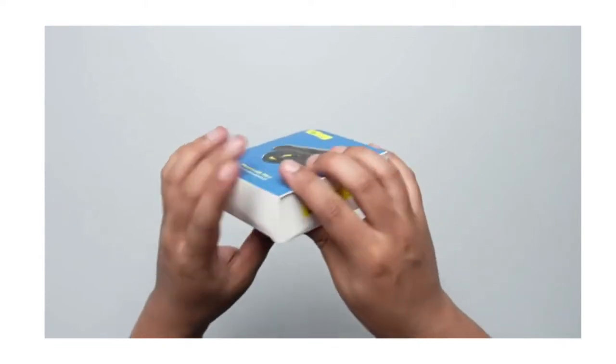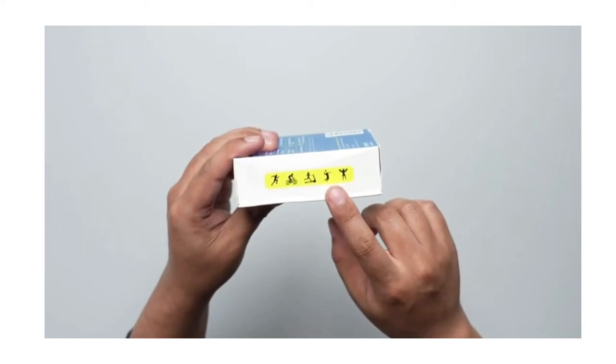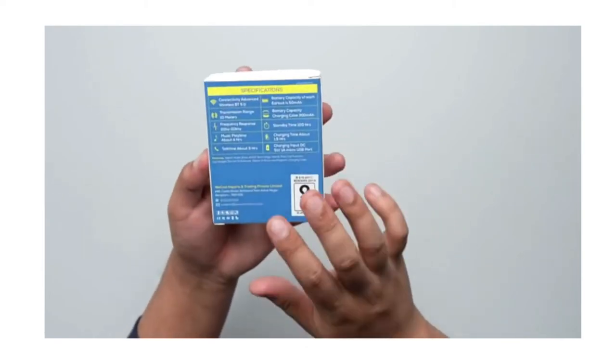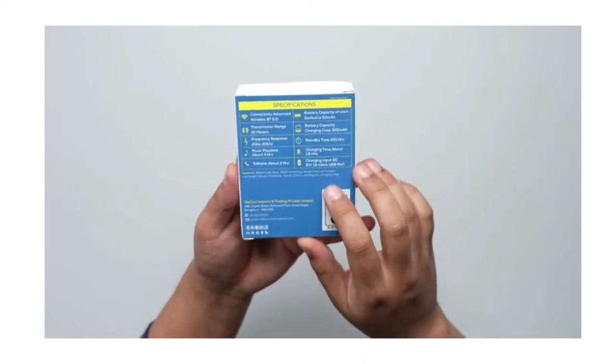When we flip the box you're going to notice all the activities that you can perform while wearing these earphones. Towards the back side of the box some specifications are mentioned like the advanced wireless Bluetooth 5.0.